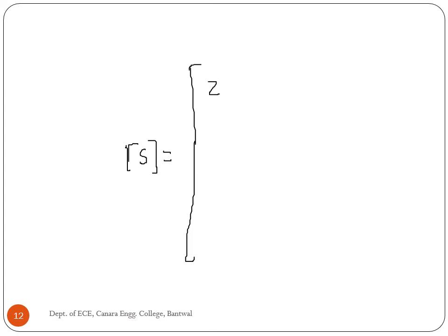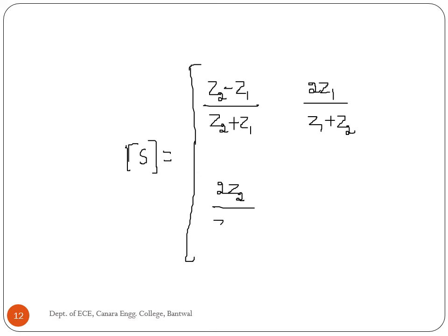To summarize the S parameters for this junction: S12 = 2Z1/(Z2 + Z1), S21 = 2Z2/(Z1 + Z2), and S22 = (Z1 - Z2)/(Z1 + Z2).